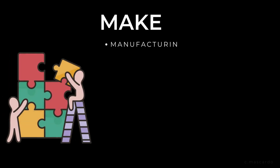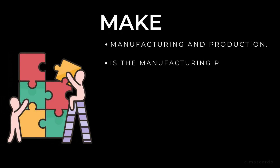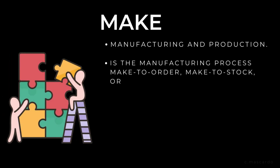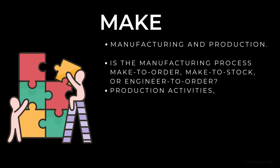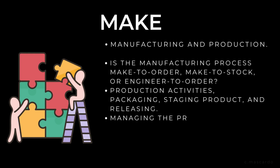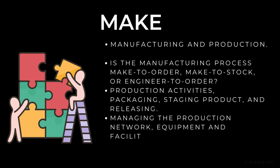Next is Make. Manufacturing and production are the emphasis of this step. Always consider whether the manufacturing process is make-to-order, make-to-stock, or engineer-to-order. The make step includes production activities, packaging, staging product, and releasing. It also includes managing the production network, equipment and facilities, and transportation.